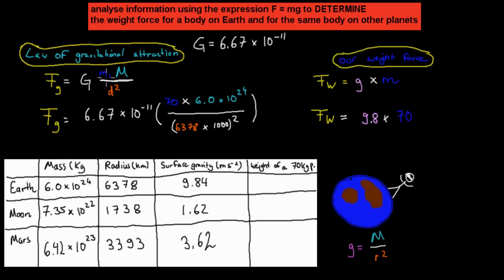We said that if mass of object 1 is us, mass of object 2 is the planet Earth, and gravitational constant is 6.67 times 10 to the power of minus 11, and the distance between us is the radius of the Earth, then we can put all that into a formula, and we'll end up getting a value of roughly 686 newtons.